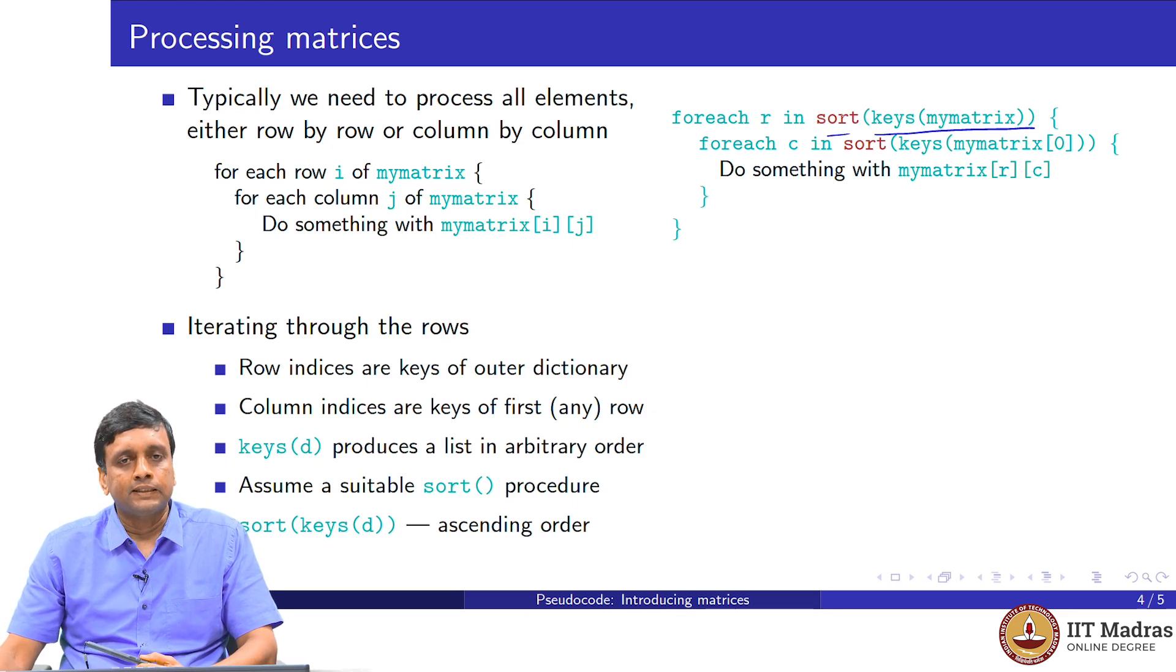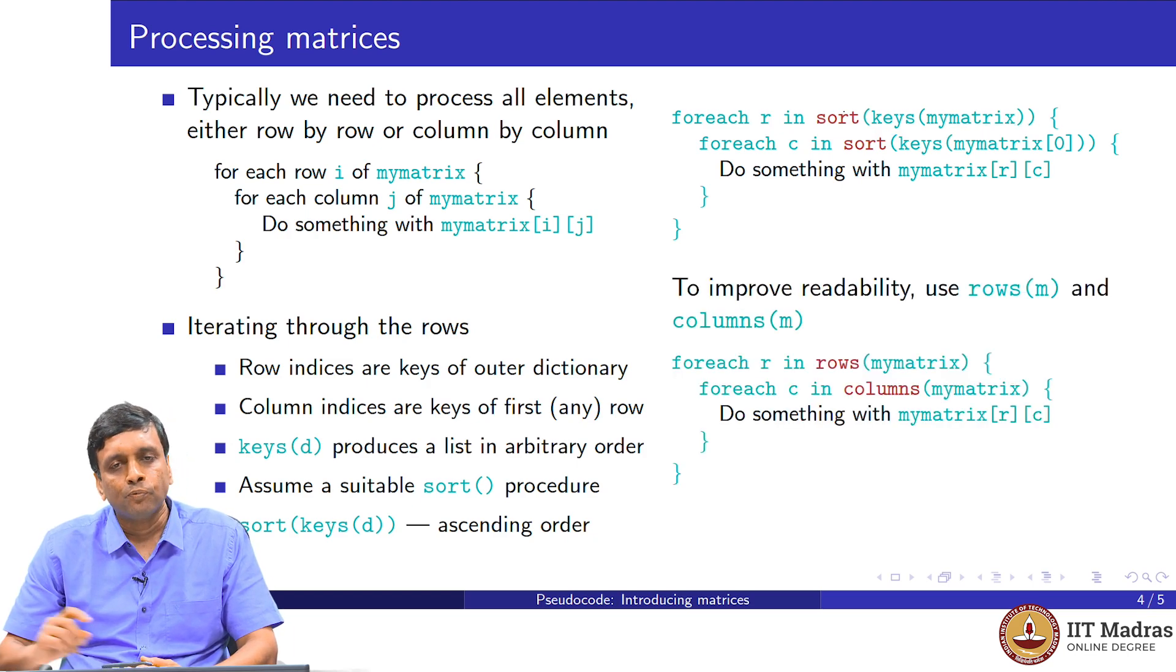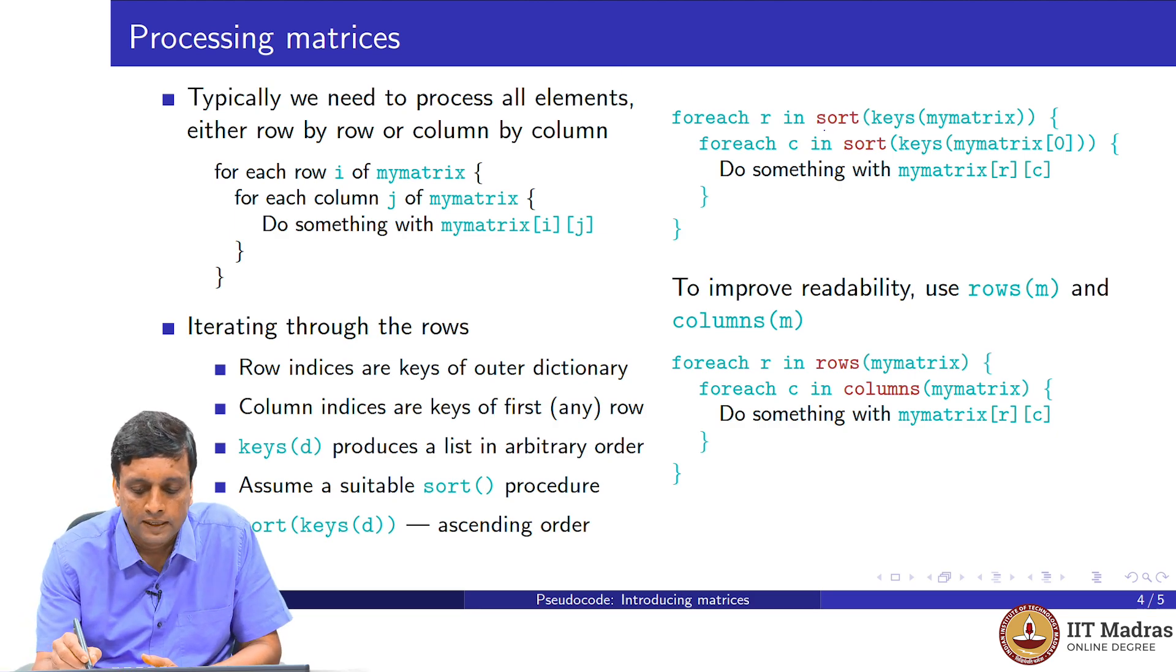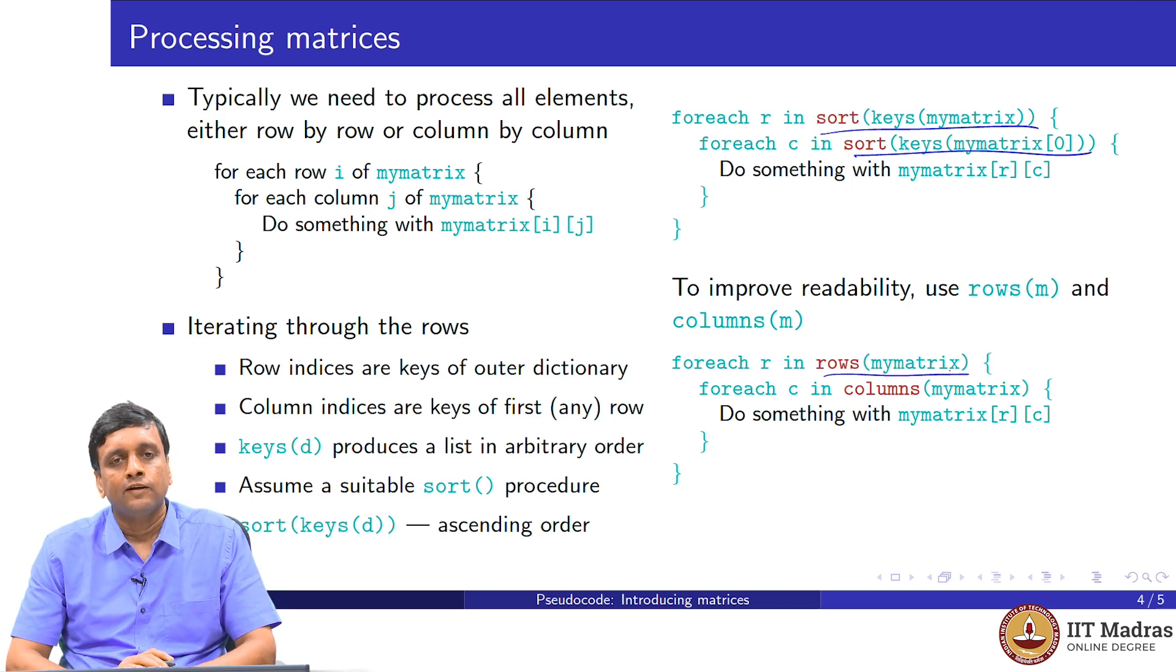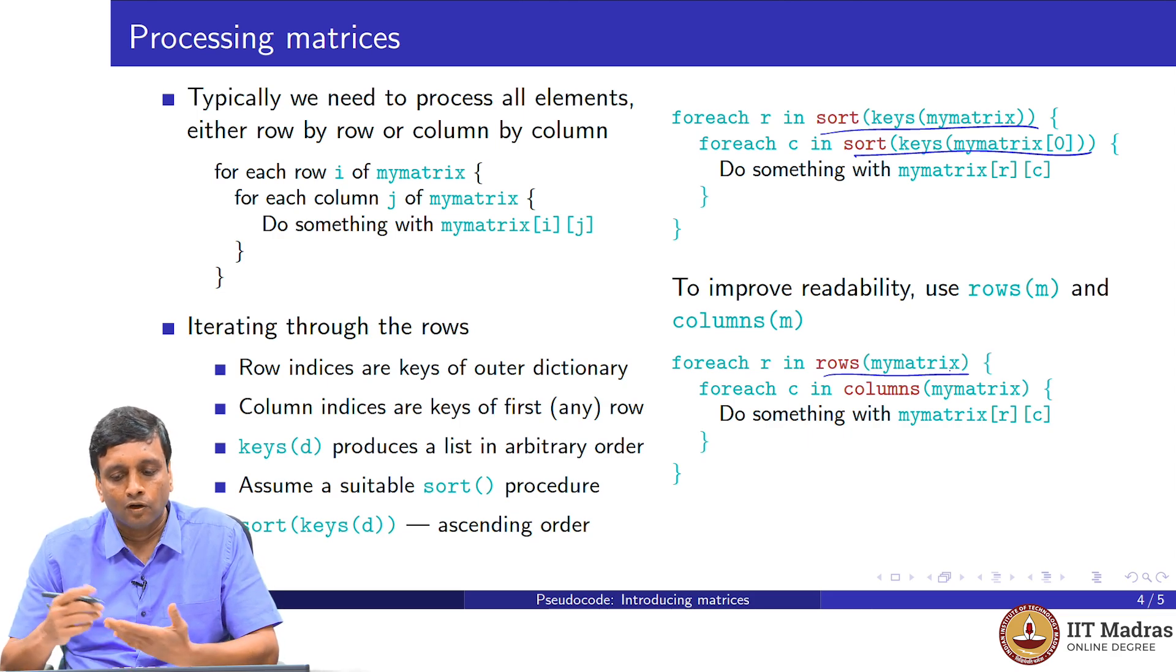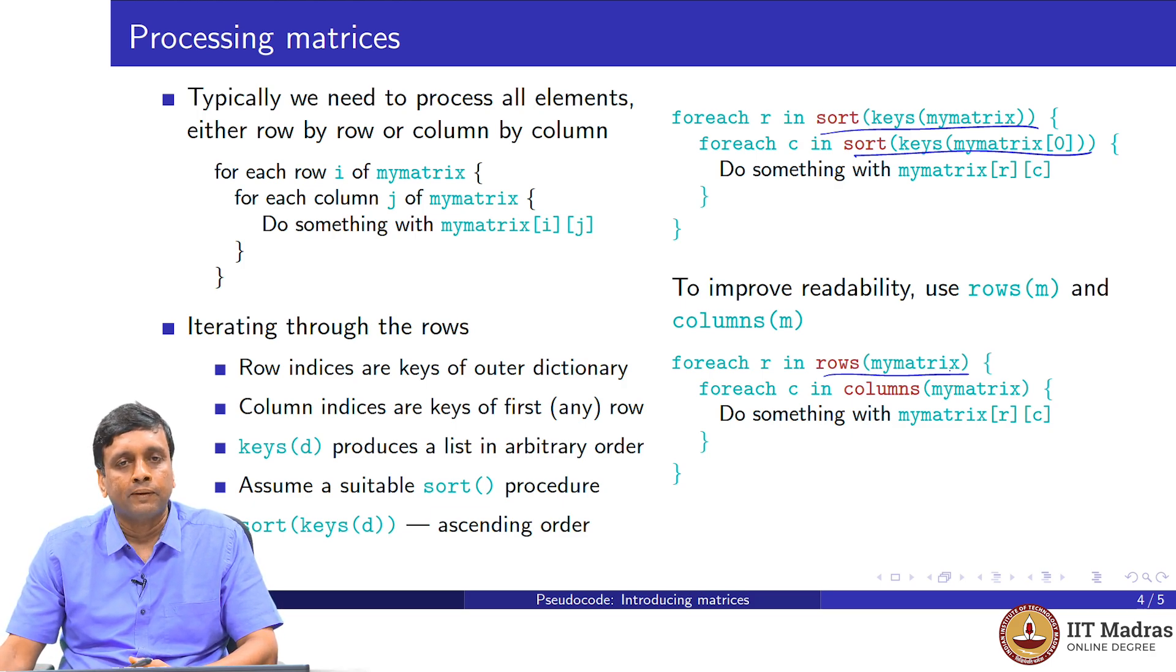If I say for every row in the sorted list of keys of my matrix and for every column in the sorted list of the column of row 0, do something, then I am guaranteed that I am processing the rows in the correct sequence and the columns in the correct sequence. This is an implementation that we could use, but because we are going to use it all the time, it is a bit tedious to write the sort and keys and all that. To improve readability, we will just use rows and columns as a kind of shortcut to refer to those values: sorted keys of my matrix. Rows of my matrix will always be sort of keys of my matrix, columns of my matrix will always be sort of keys of my matrix 0. Then when I am using a matrix, it is very transparent what I am doing. I am going through the rows or I am going through the columns.